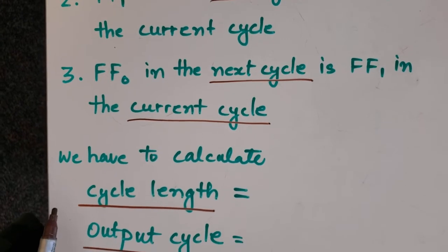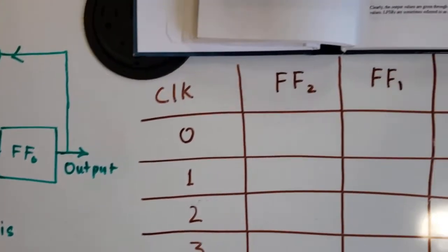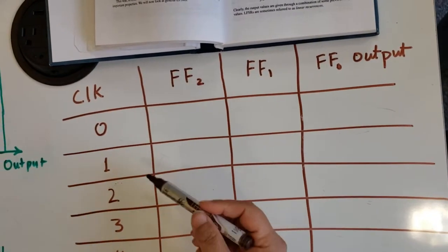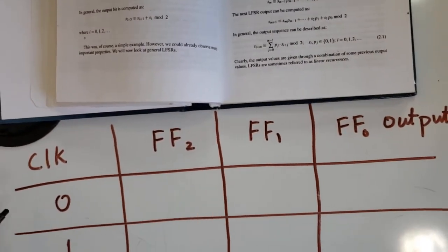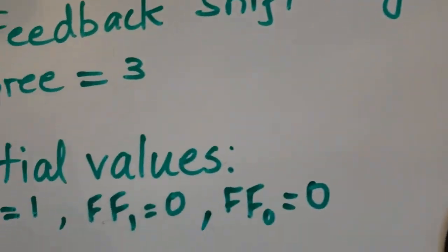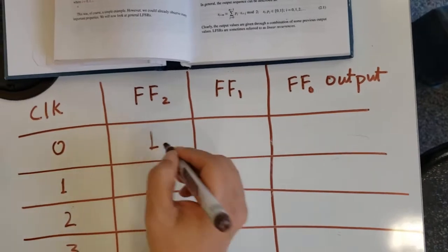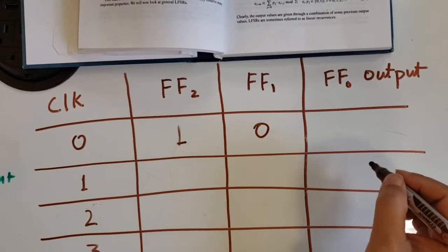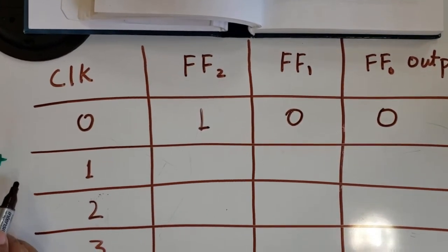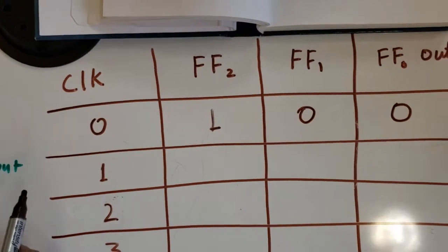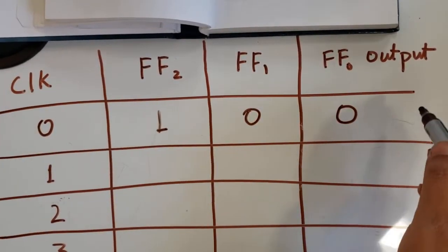For this problem we have to calculate the cycle length, output cycle, and the total output. Let's look at the table drawn here, going from clock cycle 0 all the way to 13. Clock cycle 0 is the initial cycle. The values for clock cycle 0 are FF2 = 1, FF1 = 0, FF0 = 0.